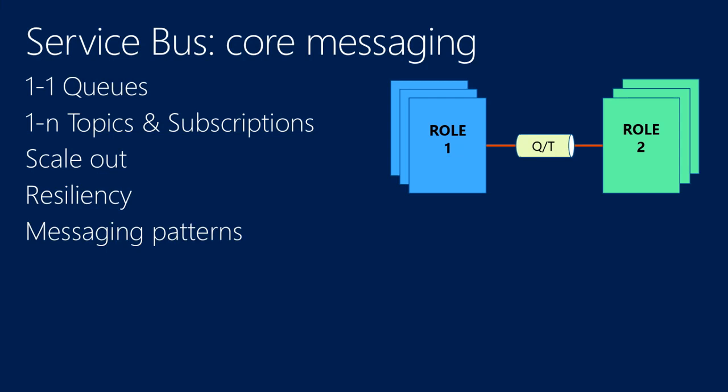Having this architecture adds resiliency. Your back-end role may be unavailable for hours, and your web roles can continue to work with no disruption because all they're doing is putting messages in the middle tier. You also get rich messaging patterns — for example, content-based routing or deduplication. Recipient list kind of addressing is all possible when you use queues and topics. From an advanced features perspective, we have durable messaging and something called sessions, which allow you to do state storage, making your service both front-end and back-end as stateless as possible.